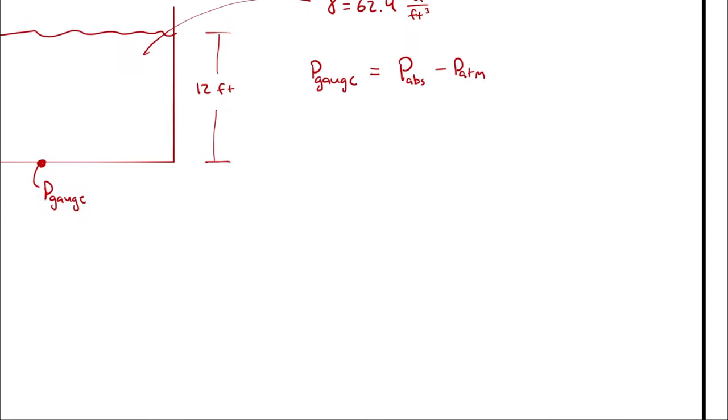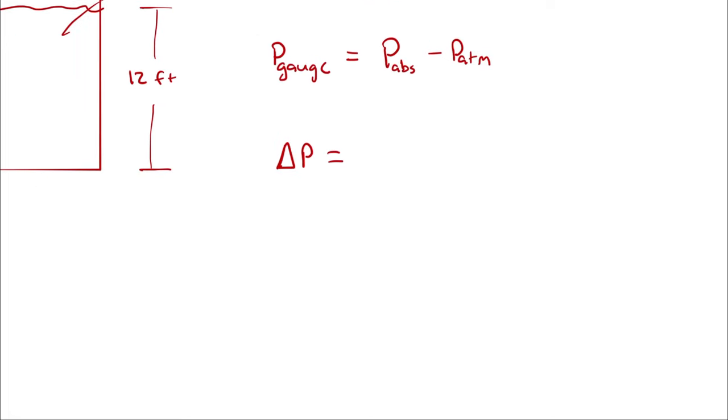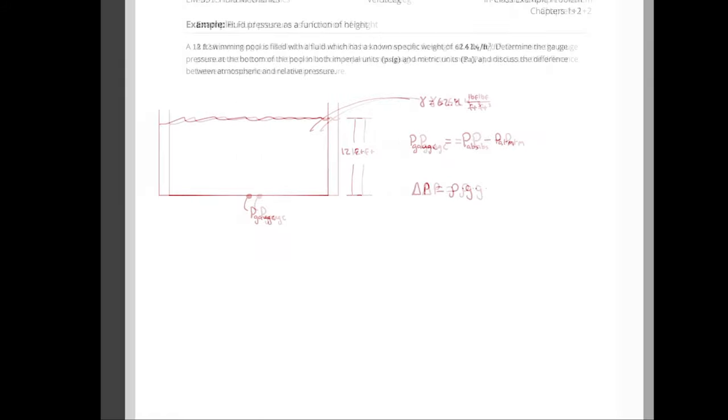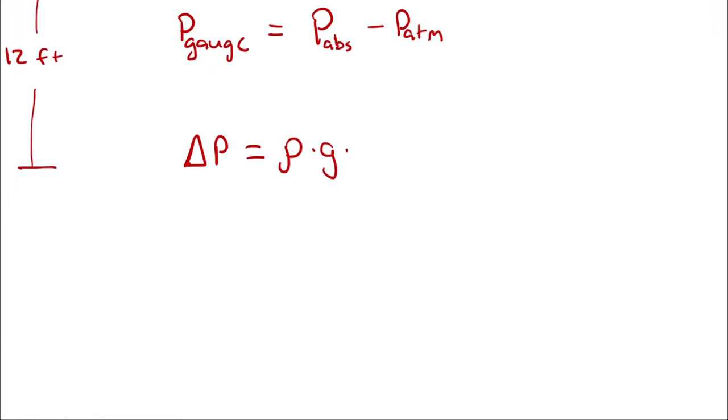I'm going to be using my equation again to relate the pressure difference across the 12-foot height of the fluid to its density. Gravitational acceleration isn't given, but I'm assuming it is 9.81 meters per second squared, standard earth gravity. And the height difference here is 12 feet.